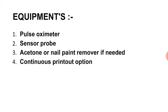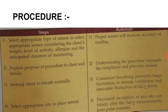Equipment includes pulse oximetry sensor probe, acetone and nail paint remover if needed, and continuous printout option. The procedure: first, select the appropriate sensor considering client weight, level of activity, allergies, and anticipated duration of monitoring. Proper sensor selection will increase the accuracy of reading।